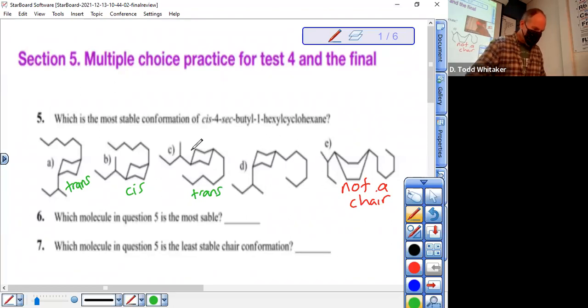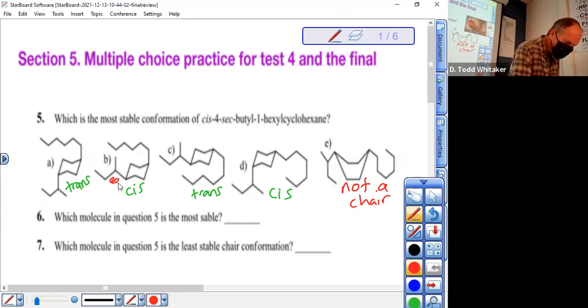This one's down and this one's up, these are cis, a possibility. So you're down to B and D. Which is the bulkier group? The bulkier group is the sec-butyl, and bulkier groups prefer being equatorial.